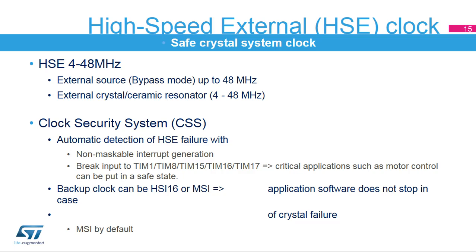The high-speed external oscillator provides a safe crystal system clock. The HSE supports a 4 to 48 MHz external crystal or ceramic resonator and also an external source in bypass mode. A clock security system allows automatic detection of HSE failure. In this case, a non-maskable interrupt is generated and a brake input can be sent to timers in order to put critical applications, such as motor control, in a safe state. When an HSE failure is detected, the system clock is automatically switched to an internal oscillator — the HSI-16 or the MSI — so the application software does not stop in case of crystal failure.